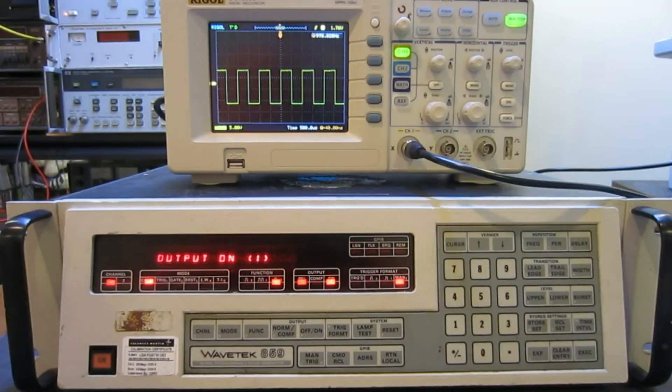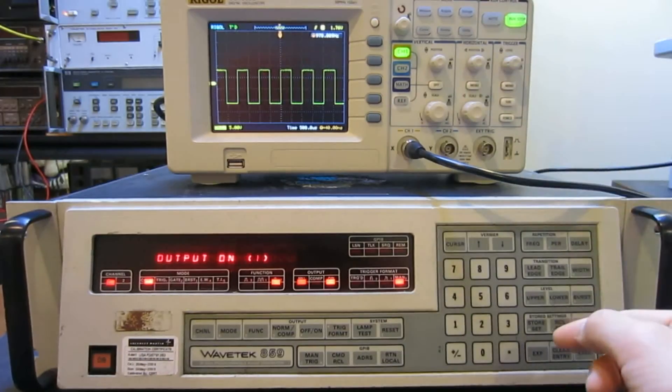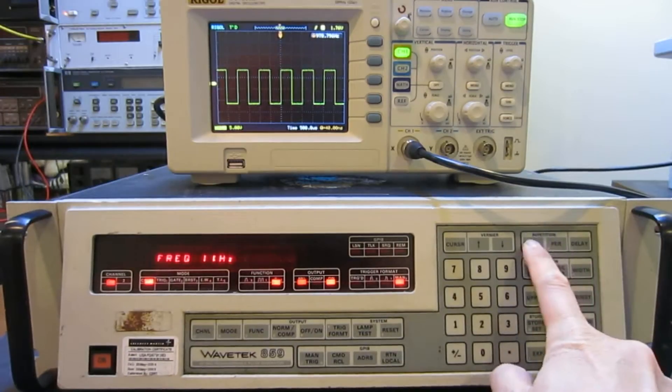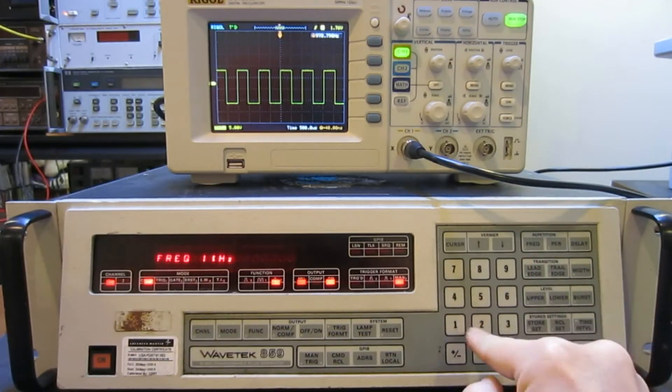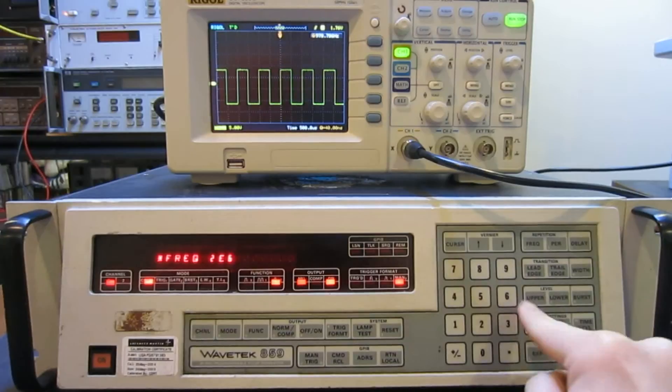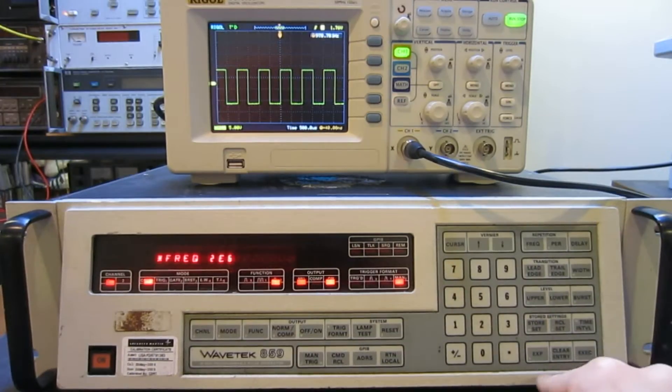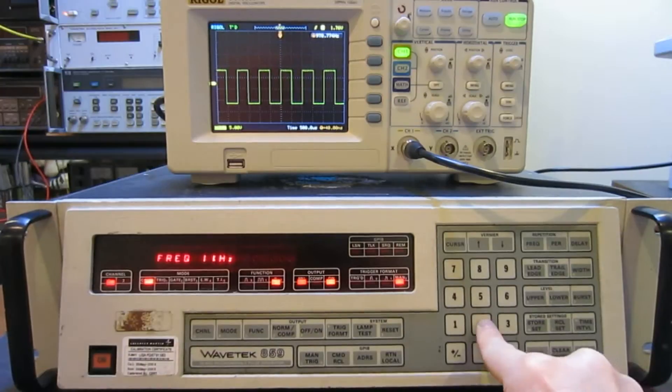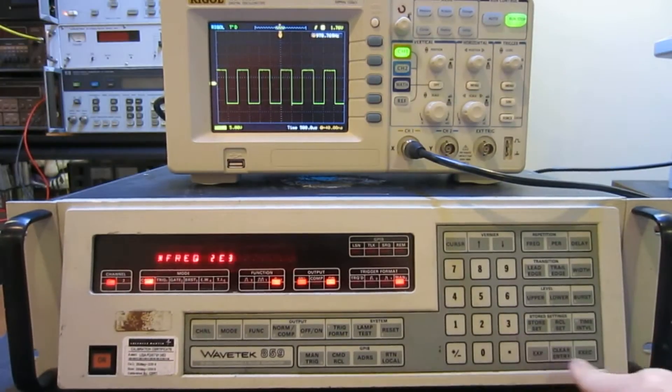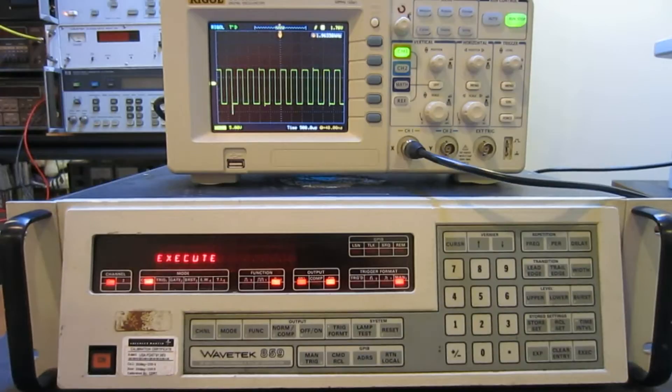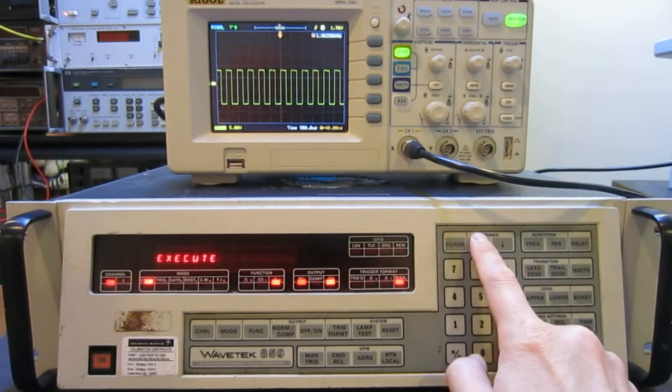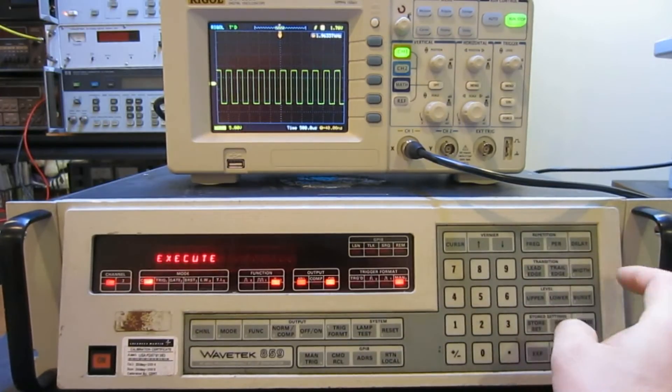Let's take a look at some of the adjustments we can do. We have this square wave showing up. We can change the frequency two ways: one is you can enter 2 kilohertz, which is 2 to the third, or we can use the Vernier here to adjust the frequency.